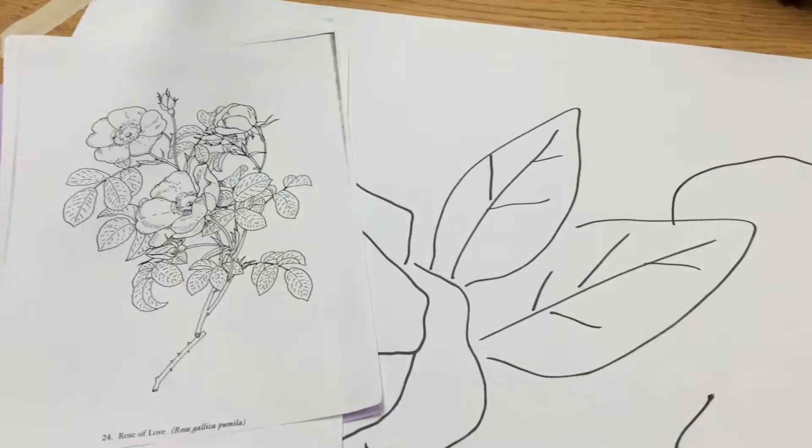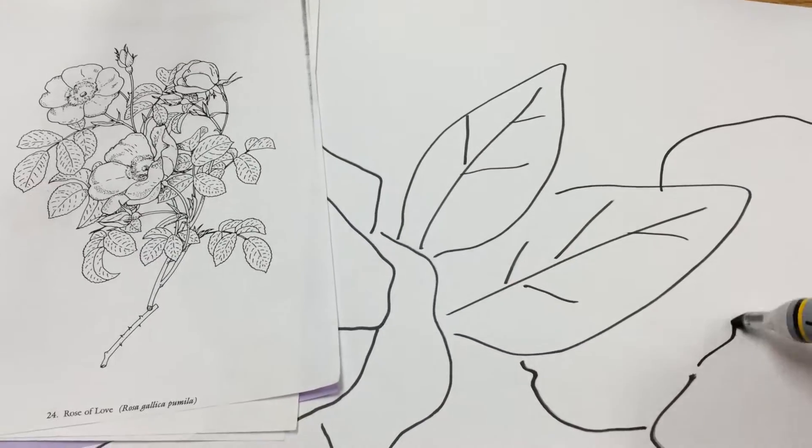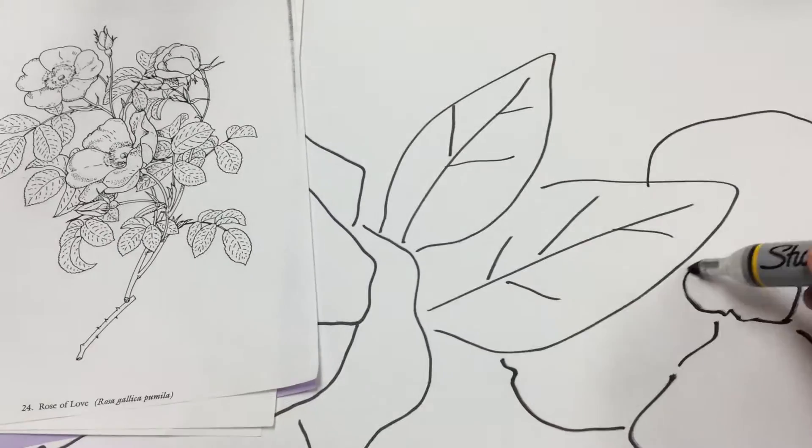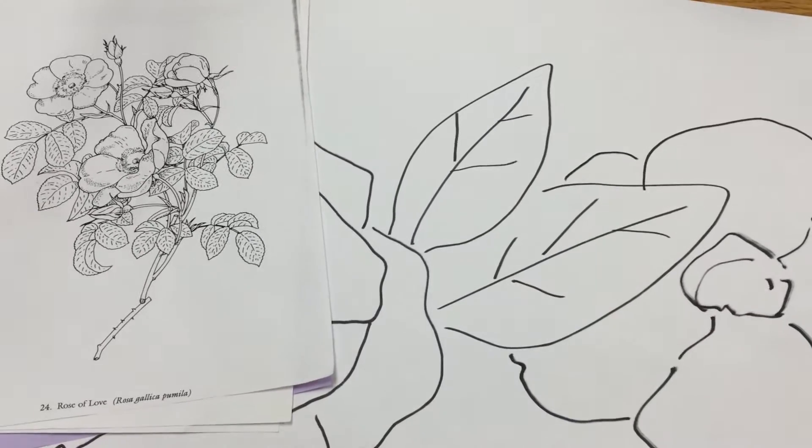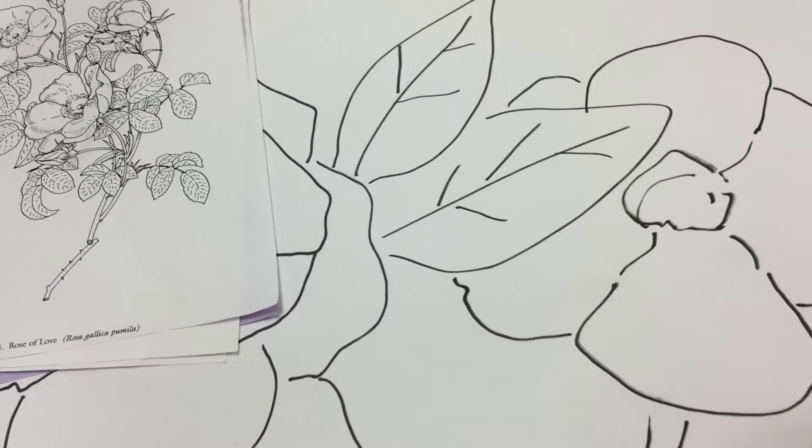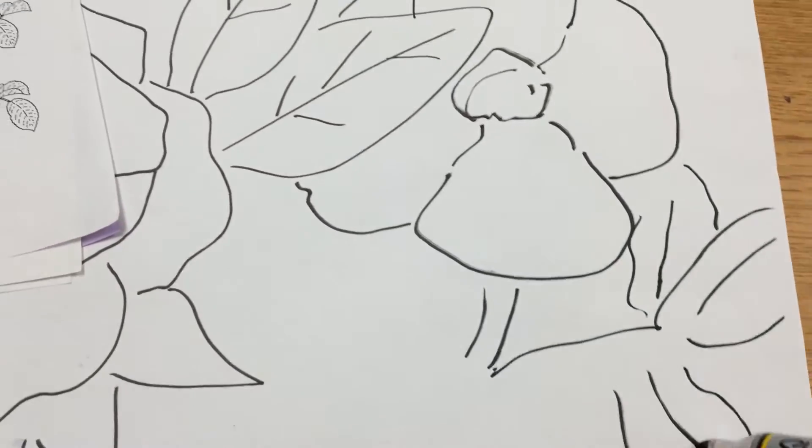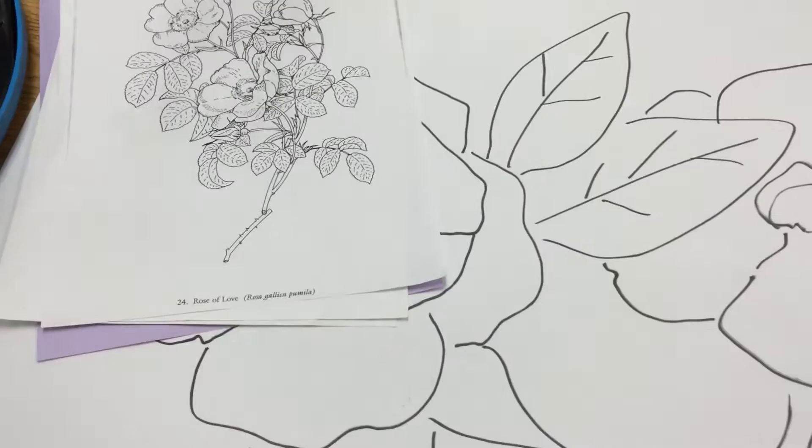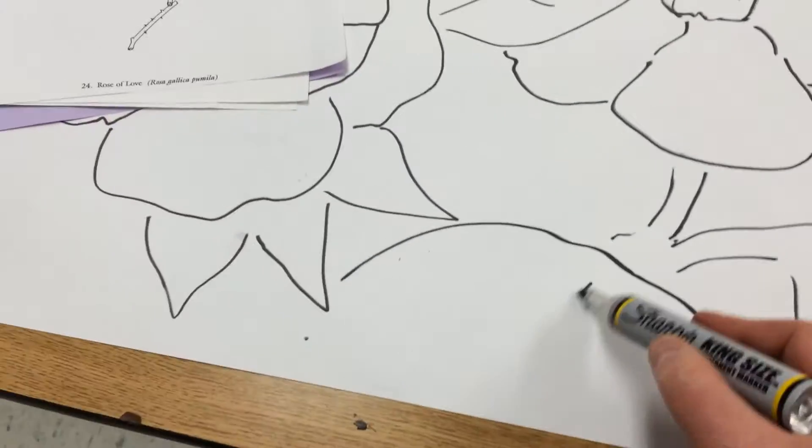I'm drawing them as big as possible so I fill the page and I'm also overlapping them. Overlapping means that one of the flowers is going to hide behind another flower and another flower is going to cover on top of another flower so that you get the idea that there's a bunch of flowers. Some are in front and some are in back.